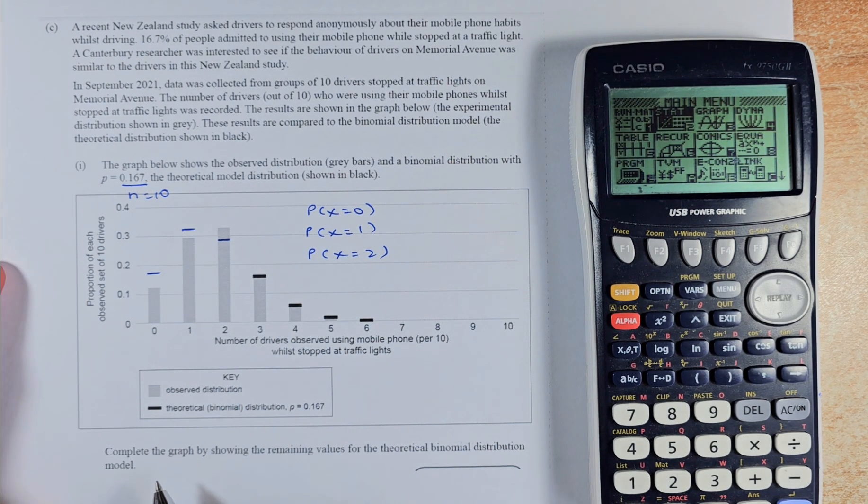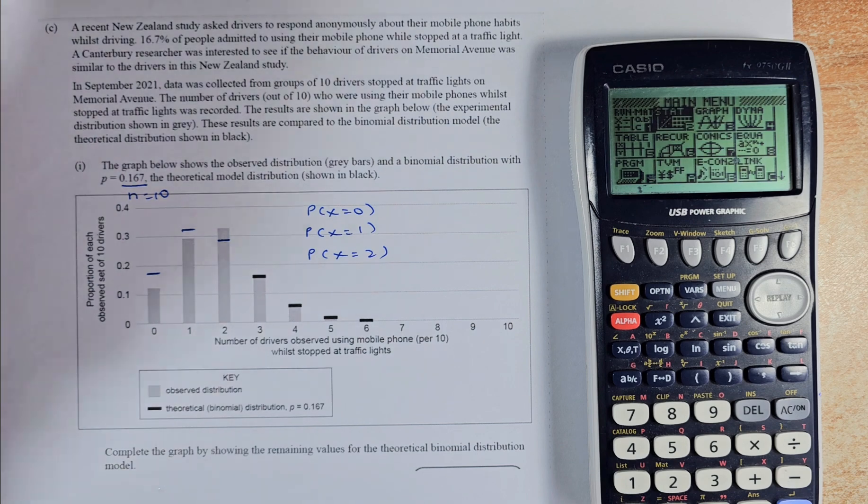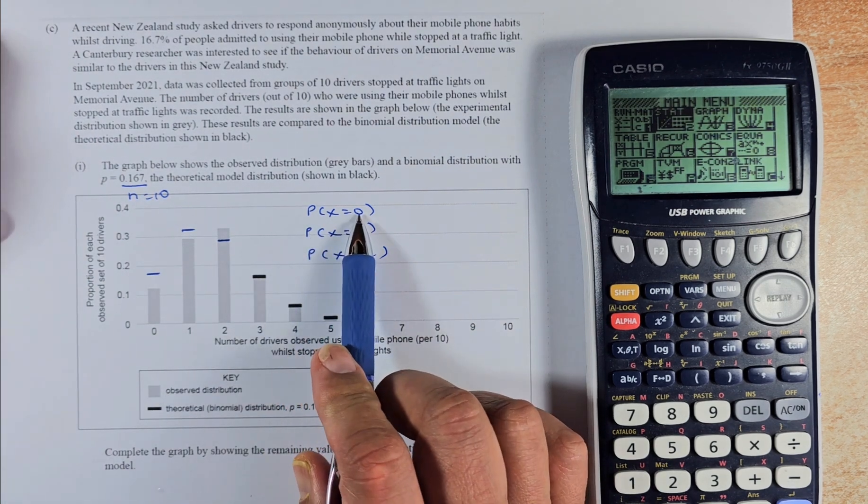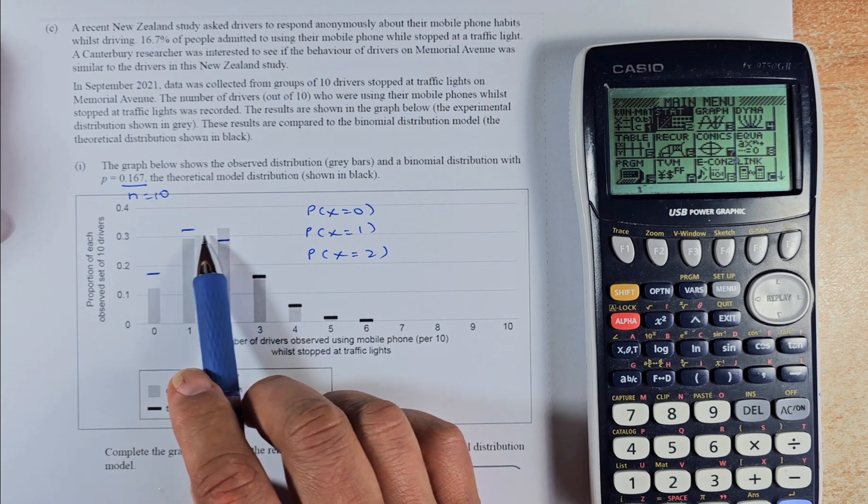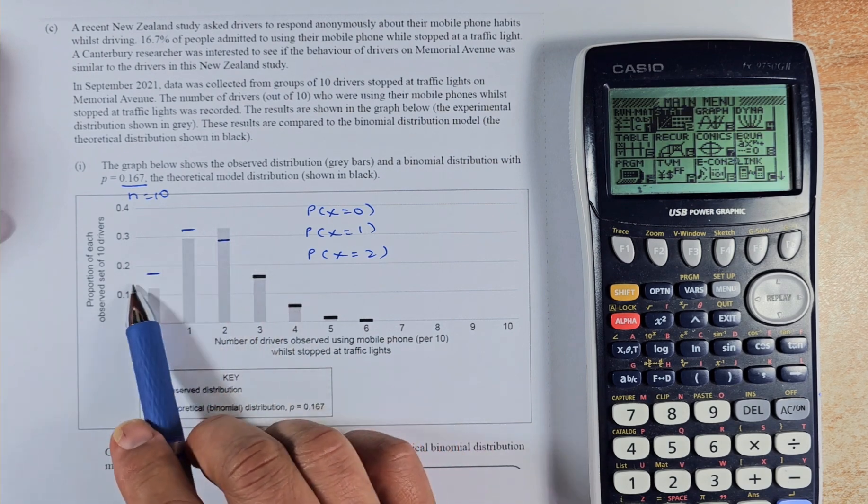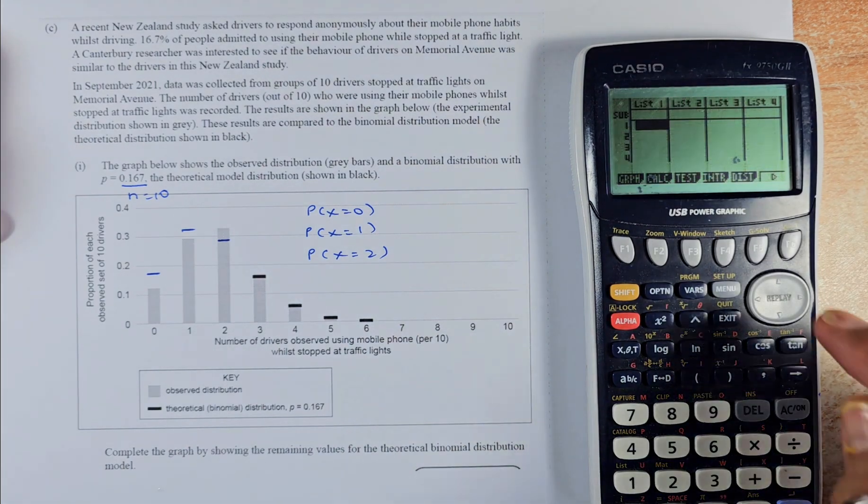So now, the question asks you to complete the graph by showing the remaining values for the theoretical probability of the binomial distribution. So we need to calculate when x equal to 0, x equal to 1. So 0 is here, 1 and 2. And I'm going to show you how you get the values and you're going to put the numbers in there. So now, we're going to go to statistics. Now we're going to do distribution.